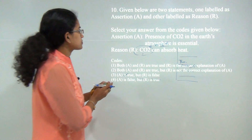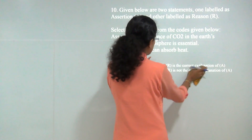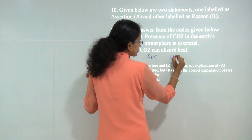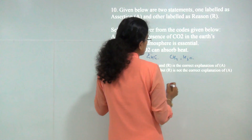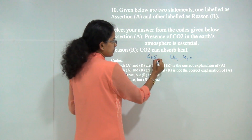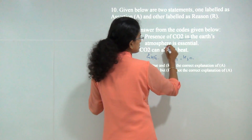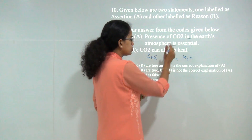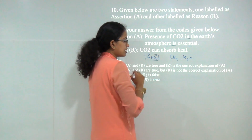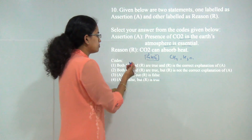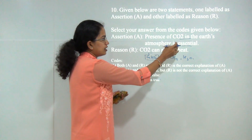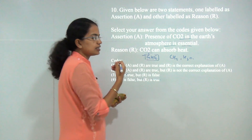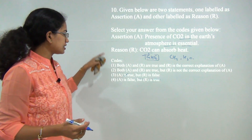Next question: assertion and reason on carbon dioxide. Carbon dioxide absorbs heat — that is correct because it is one of the greenhouse gases, similar to methane and water vapour. The presence of CO2 in the earth is essential. If there were no greenhouse gases, the earth would have become a frozen ball of ice. So we require carbon dioxide to maintain the greenhouse effect in the atmosphere. Both assertion and reason are correct, and the reason is the correct explanation, so the answer would be 1.